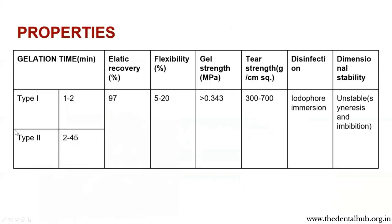Properties of Type 1 and Type 2: Type 1 is the traditional and Type 2 is the two-paste system. Type 1's gelation time is shorter than Type 2; otherwise, all their properties are comparable. Elastic recovery is 97%, flexibility 5 to 20%, gel strength greater than 0.34%, tear strength 300 to 700 grams per centimeter squared, and disinfection with iodophore immersion. Dimensional stability is poor because of syneresis and imbibition.